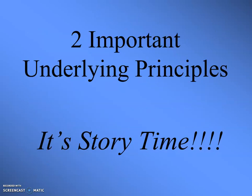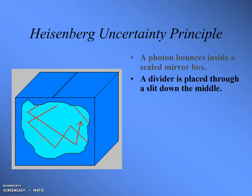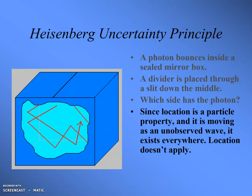There are two really important stories you've probably heard of, especially if you've watched Big Bang Theory. One is the Heisenberg uncertainty principle. Suppose you have a photon — a light photon — bouncing around inside of a box that's all mirrors inside. You put a divider, like a double-sided mirror, right down the middle of the box and cut the box in half. Which side is the photon — left or right? Since location is a particle property and you can't actually see it because everything is sealed, it is acting like a wave, so it exists everywhere simultaneously.